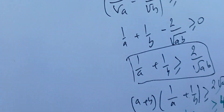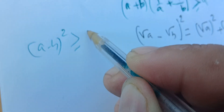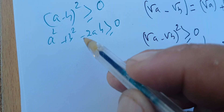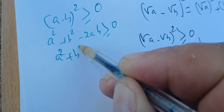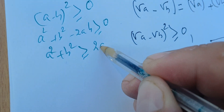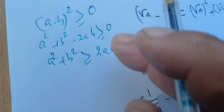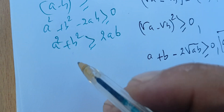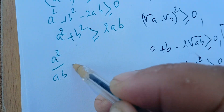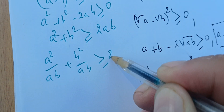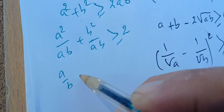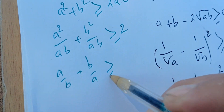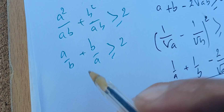Another way is to do the following. We know that (a - b)² is always greater than or equal to zero. Expanding, we get a² + b² - 2ab ≥ 0, and adding 2ab to both sides gives a² + b² ≥ 2ab. Since a and b are both strictly positive, we can divide by ab, giving a²/ab + b²/ab ≥ 2, which simplifies to a/b + b/a ≥ 2.